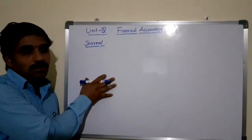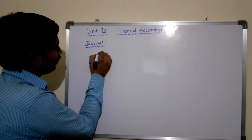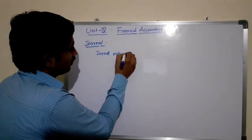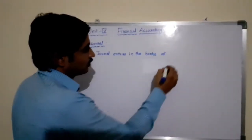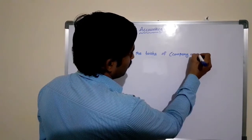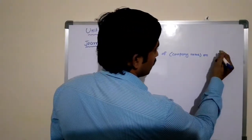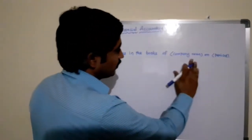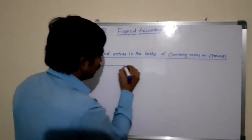Here let us see the format of journal entries. The title of this statement is called journal entries in the books of — followed by the company name — for the period. So the heading reads: journal entries in the books of [company name] for [period]. This is the standard format header for preparing journal entries.